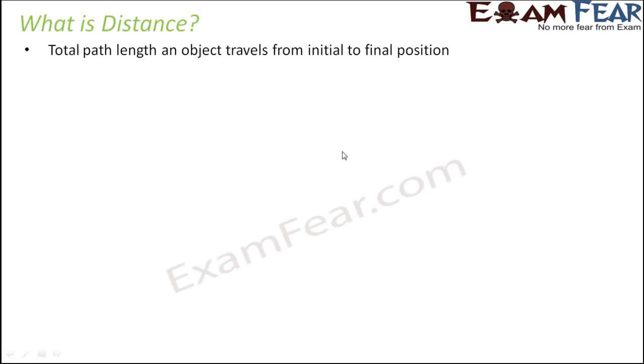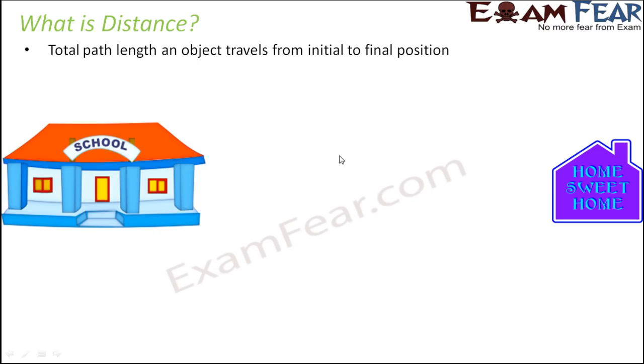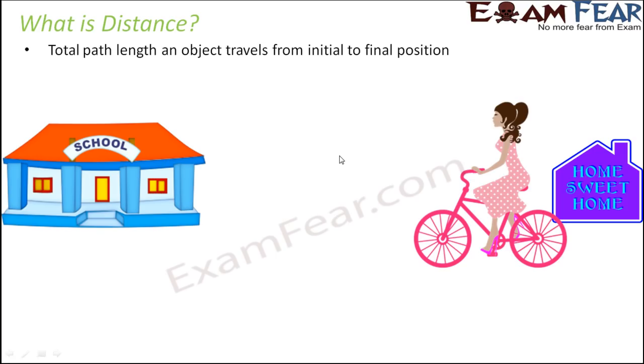It is the total path length an object travels from initial to final position. Let's take an example to understand it better. Let's say this is your home and this is your school, and this girl is traveling with her bicycle from home to school. What would be the total distance here? The path length from initial to final position - home is the initial position and the final position is school. So the total path length that she is going to cover from home to school, that path length is nothing but the distance.